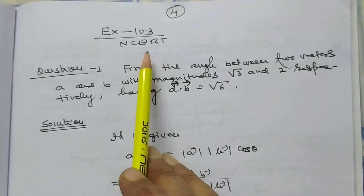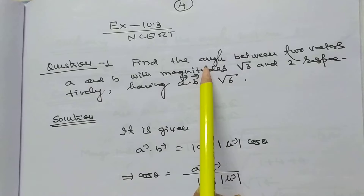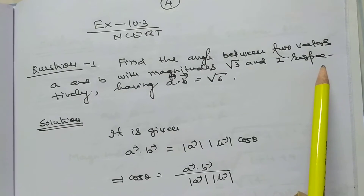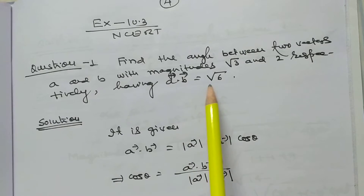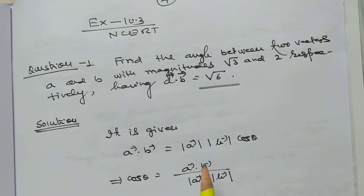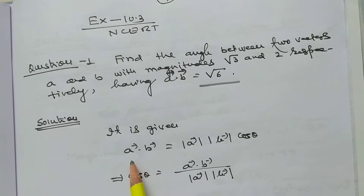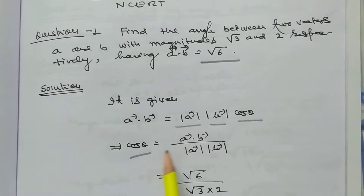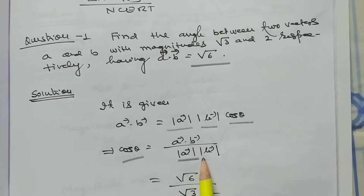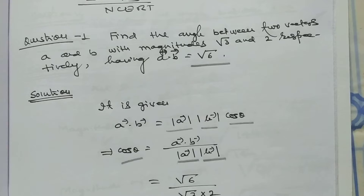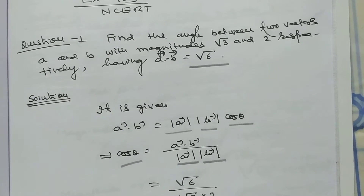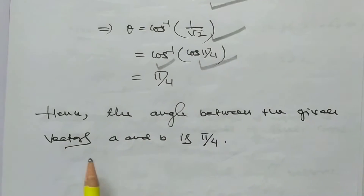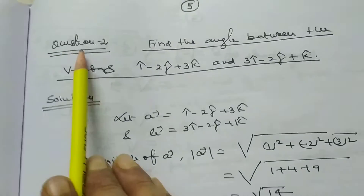Now I want to discuss some important problems from Exercise 10.3. Question 1: Find the angle between two vectors A and B with magnitudes root 3 and 2 respectively, given that vector A dot vector B equals root 6. Using cos theta equals (A dot B)/(|A||B|), we get cos theta equals root 6 divided by (root 3 times 2) equals 1 by root 2. Therefore theta equals cos inverse (1/root 2) equals pi/4. Hence the angle between the given vectors is pi/4.